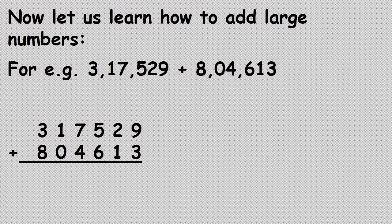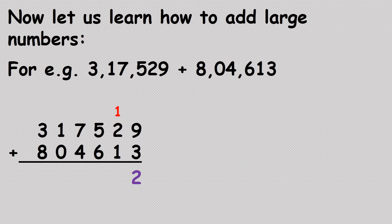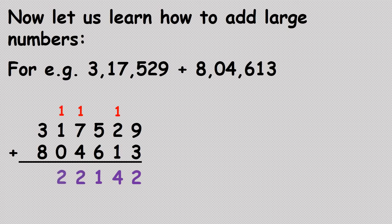Step one: arrange the numbers as per the place value chart. Step two: add all the digits in each column starting from the units place. The numbers in the units place are nine and three. Nine plus three is twelve, so we carry one and write two in the units place. The next column is one plus two plus one, which is four. In the same way we add all the numbers, and the answer we get is eleven lakh twenty-two thousand one hundred and forty-two.